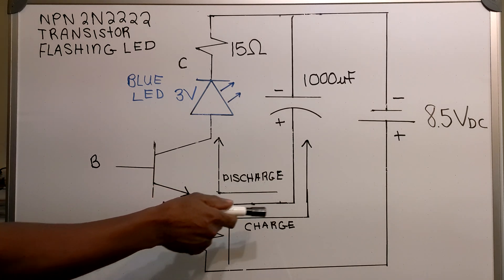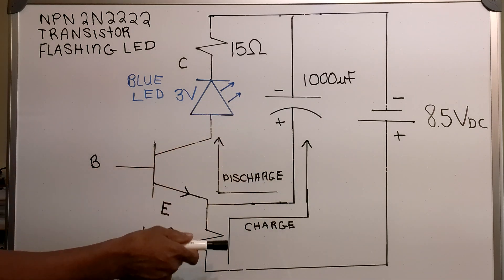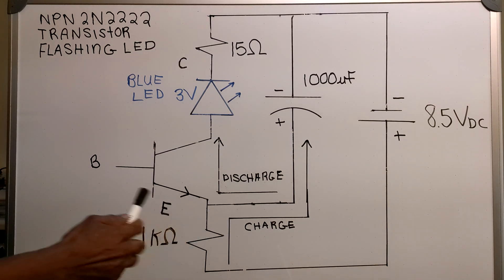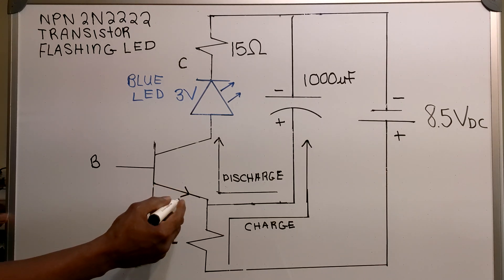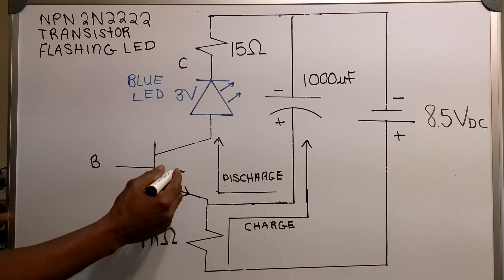The capacitor is charged up through the 1k ohm resistor. Then when the base emitter junction reaches 5 volts...